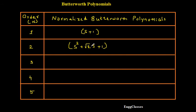For order 3, the Butterworth polynomial in factored form is s square plus s plus 1, multiplied with s plus 1.